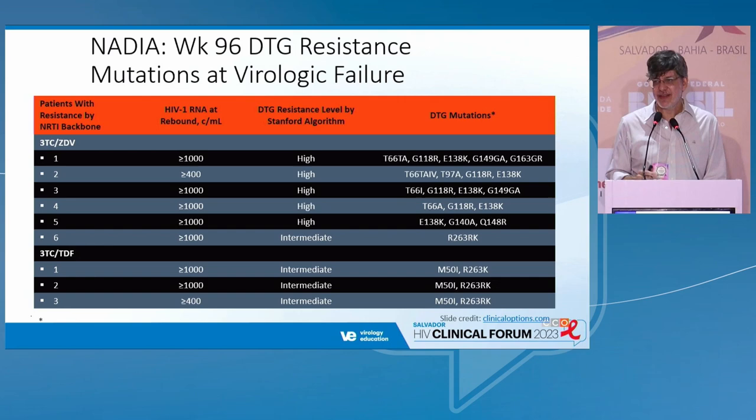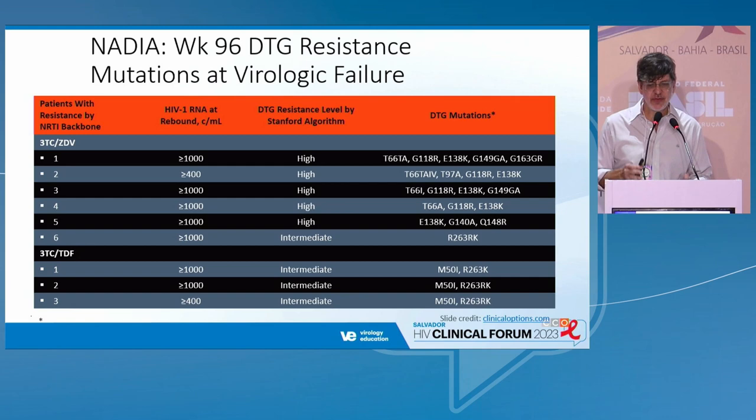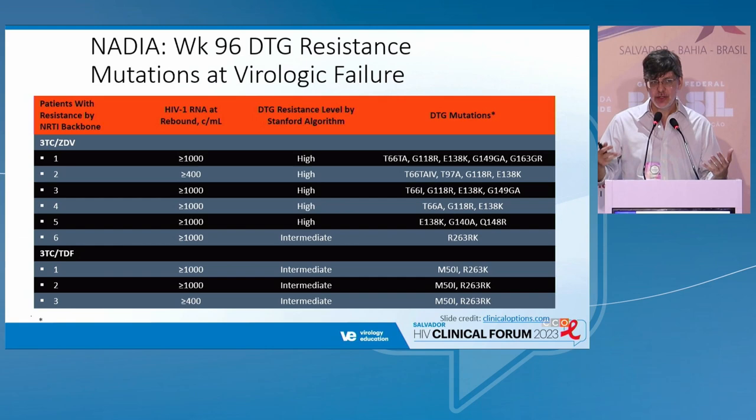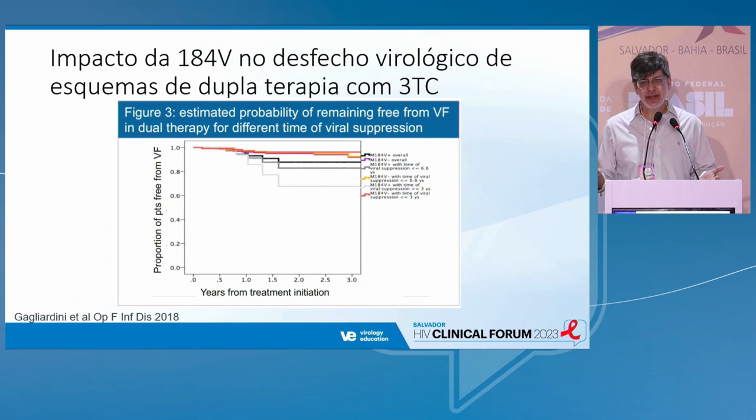But there is a problem somewhat different from the simplification studies. The risk of failures with resistance is higher. In salvage studies we see resistance in nine patients, and it is more frequent in arms with two new drugs — zidovudine and dolutegravir — than in the arm that kept tenofovir. This is a risk we have to keep in mind, but the virological chance for success is much better.